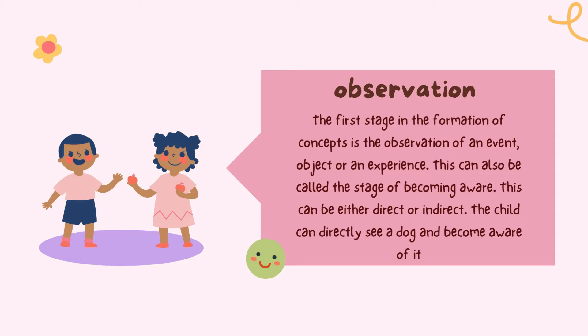On the other hand, a child also hears stories about devils and giants from parents and grandparents — here the awareness is indirect. Thus, all of us have some knowledge or awareness of primitive people, even though most of us have not seen them. Generally, repeated experiences provide the basis for the development of concepts. Our perceptions, imaginary experiences, formal or informal learning, provide opportunities for getting mental images of objects, persons, or events.